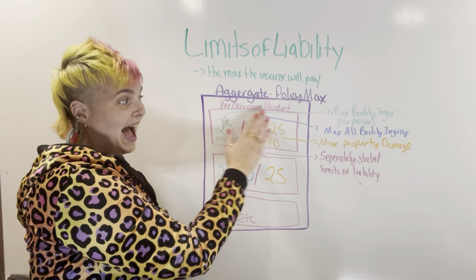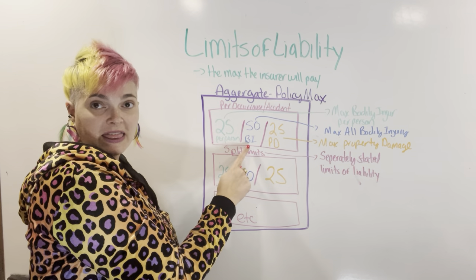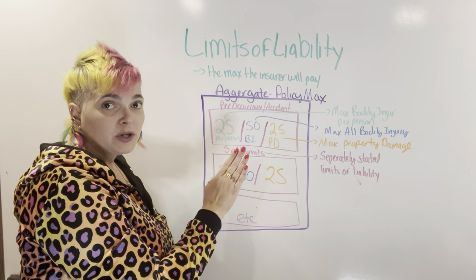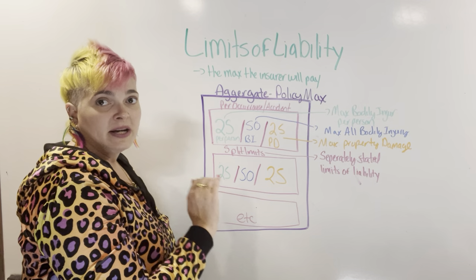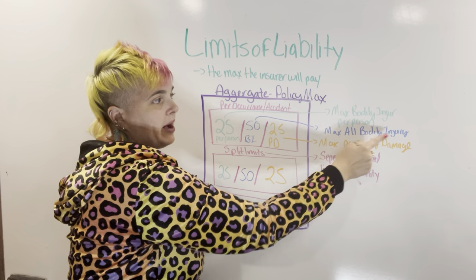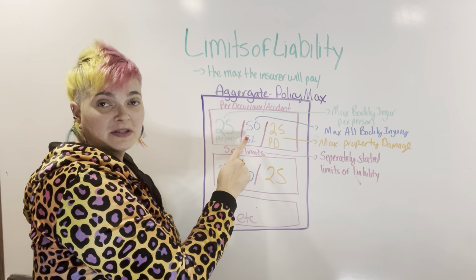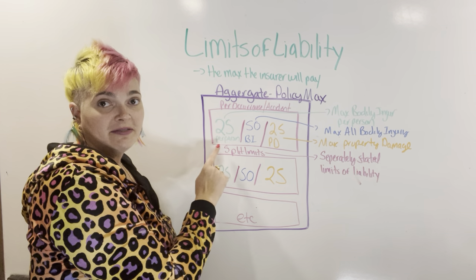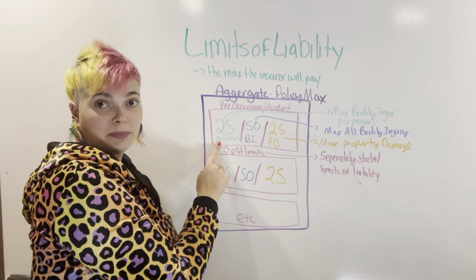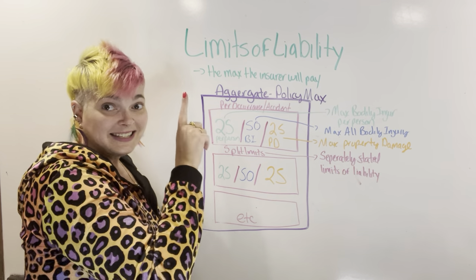Each accident has a per occurrence total limit, but it breaks down further. You get $50,000 total for all bodily injury. So no matter how many people you crash into — whether you hit one person, 10 people, or 20 people — the most the insurer will pay is $50,000 for all bodily injuries in total. Now each person also has a limit: even though you have $50,000 for all bodily injuries, each person can only get up to $25,000.